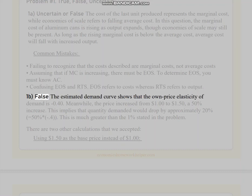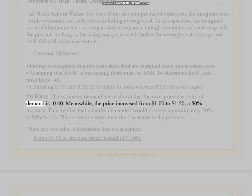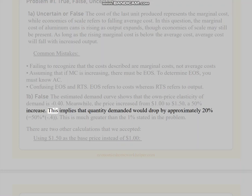1B. False. The estimated demand curve shows that the own price elasticity of demand is -0.40. Meanwhile, the price increased from $1 to $1.50, a 50% increase. This implies that quantity demanded would drop by approximately 20% = 50% * -0.4. This is much greater than the 1% stated in the problem.